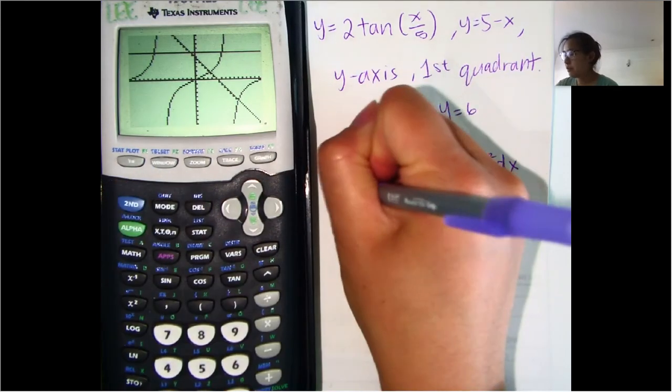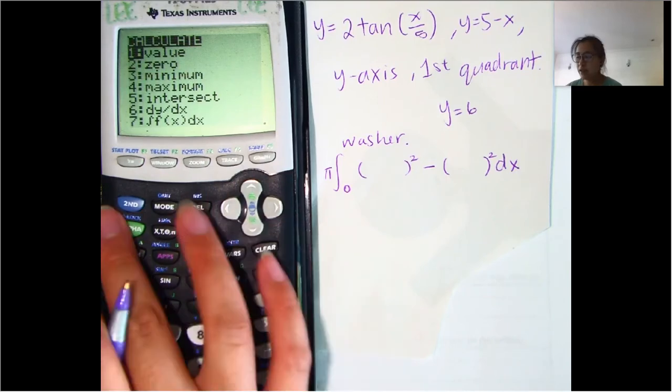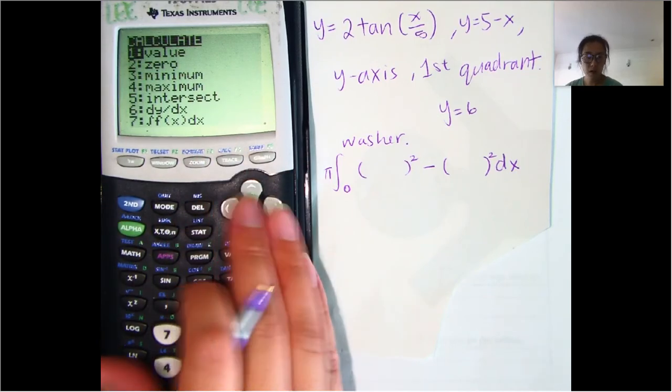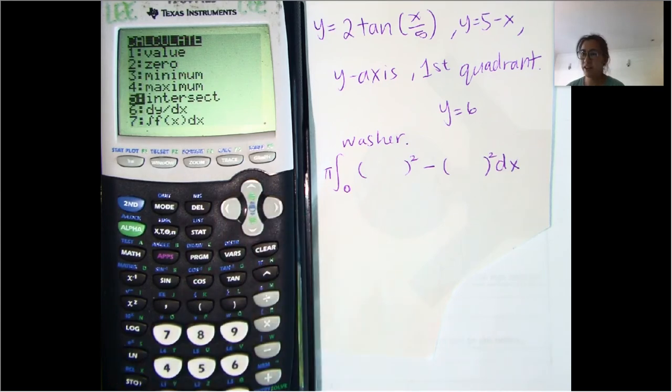and then let's go ahead and press second calc and then we go down to intersect, so intersect for intersection point.